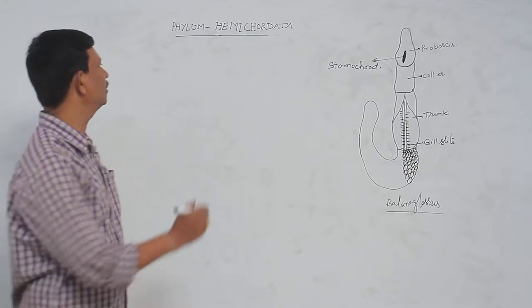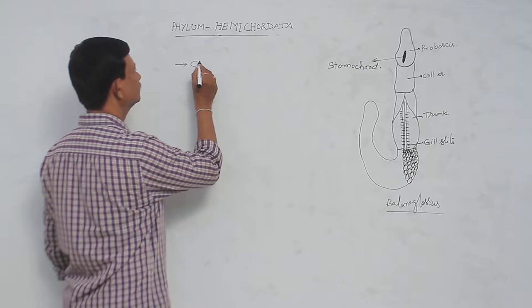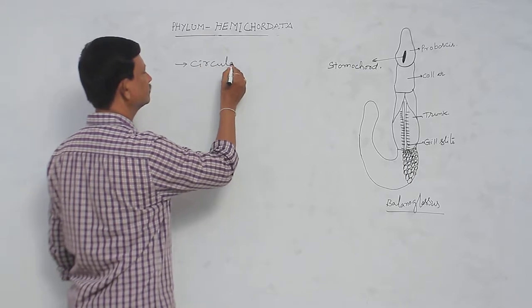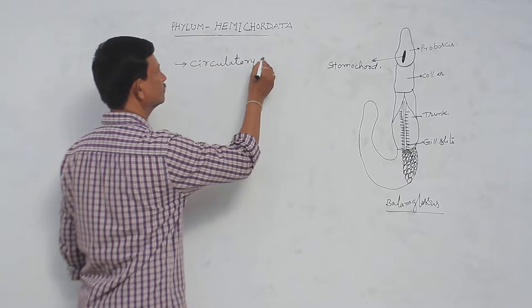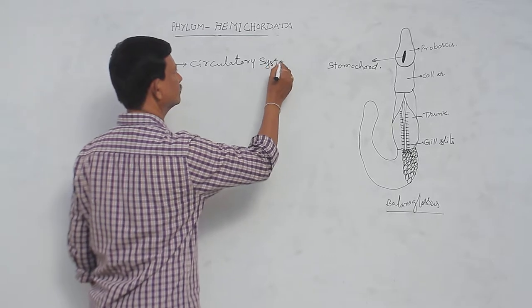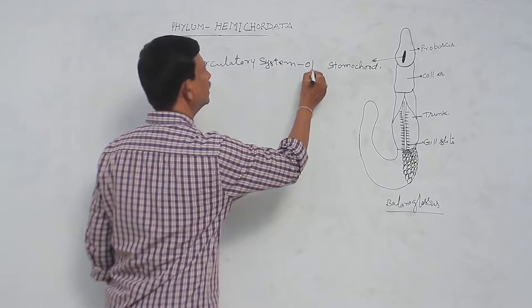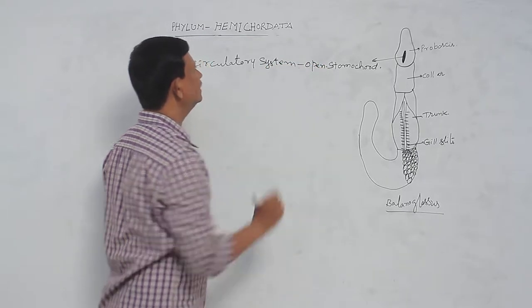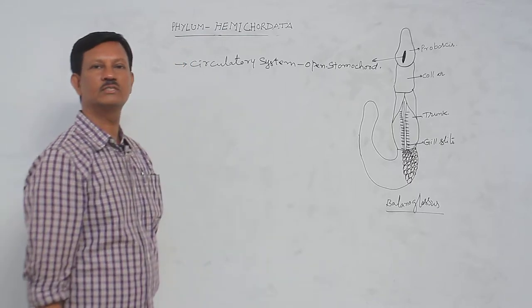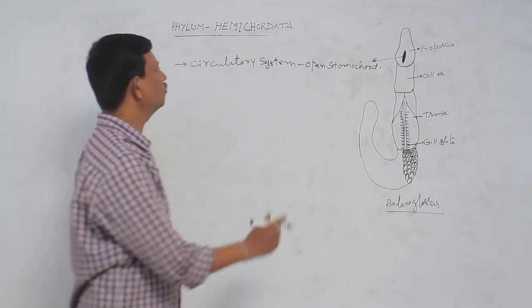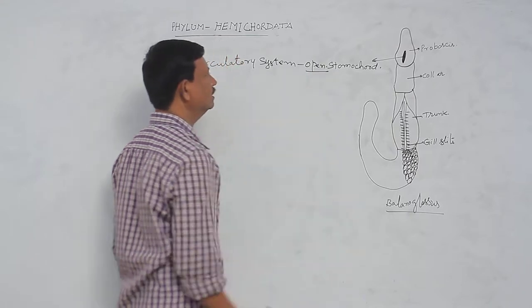Circulatory system is open type of circulatory system. In chordata, usually closed blood vascular system is present, but here open type of blood vascular system is present.